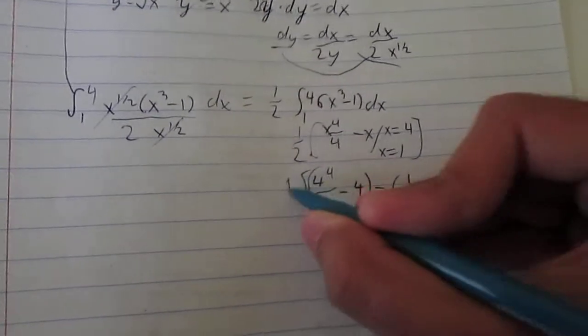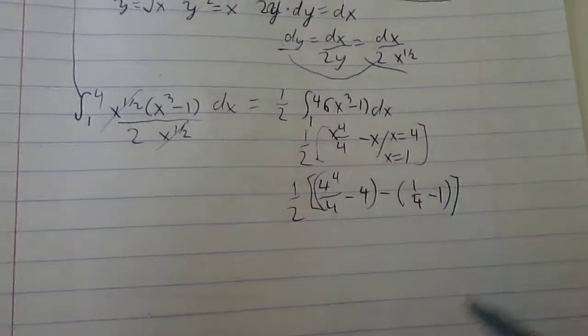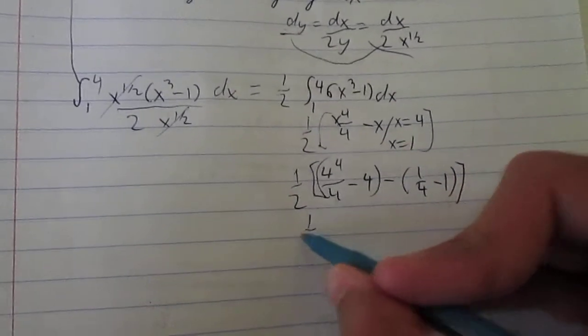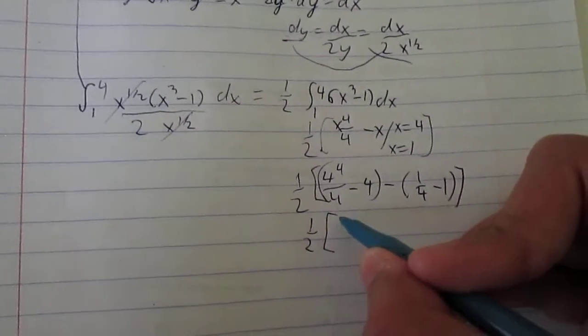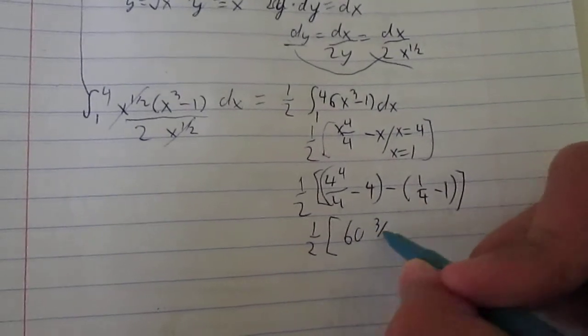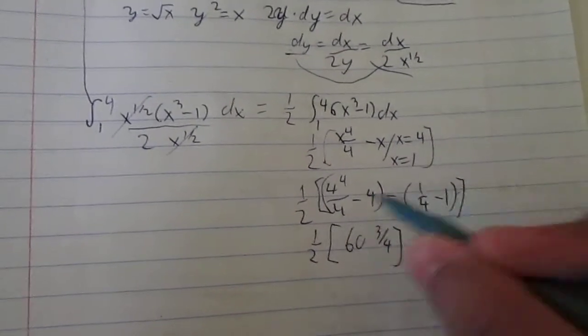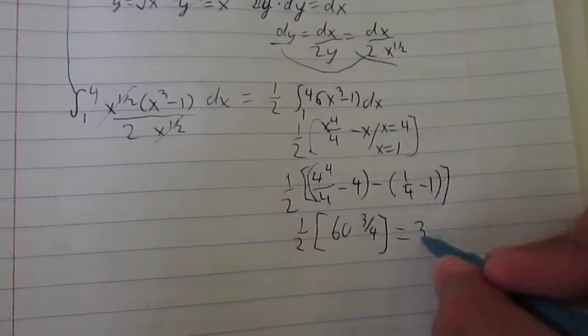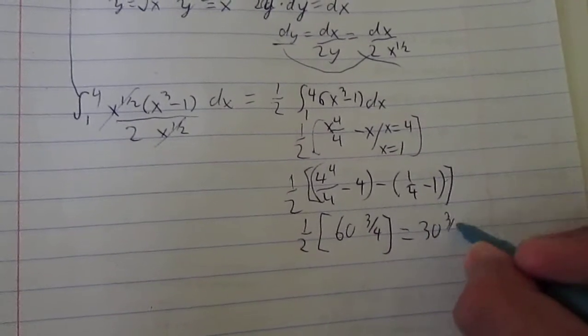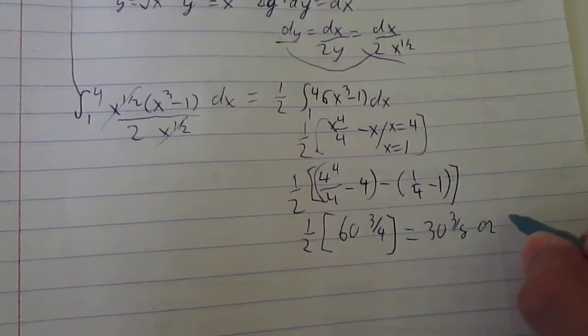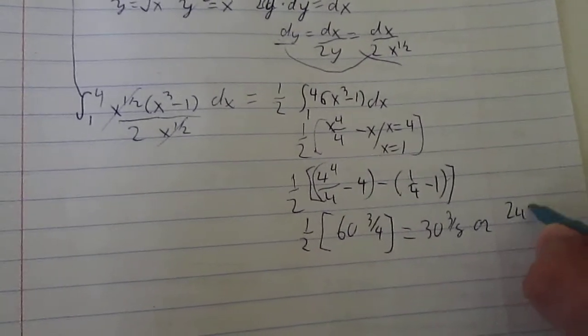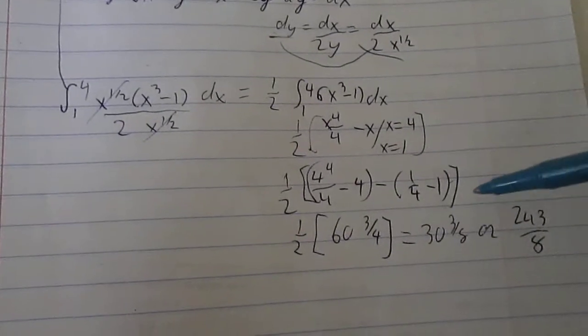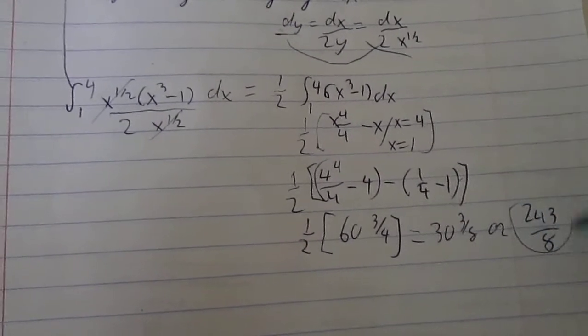Which, when you eventually work it out, I mean, I could do this, but you can just trust my word that it's going to be 1 half times 60 and 3 fourths. I mean, that's where that, yeah. And that's equal to, 1 by 2 is 30, and 3 eighths. Or, 243 over 8. And this, right here, is the solution.